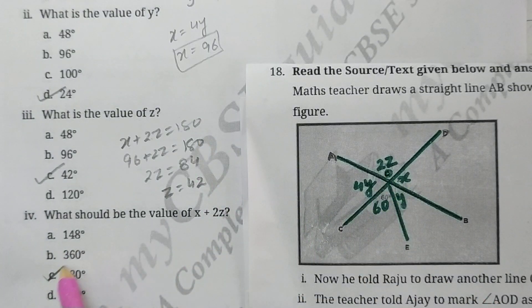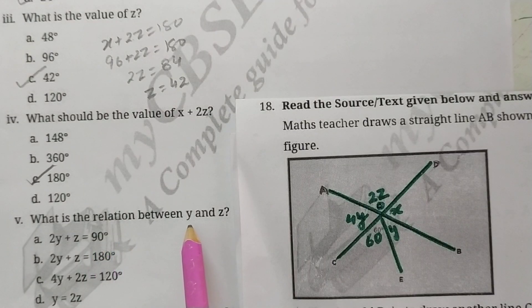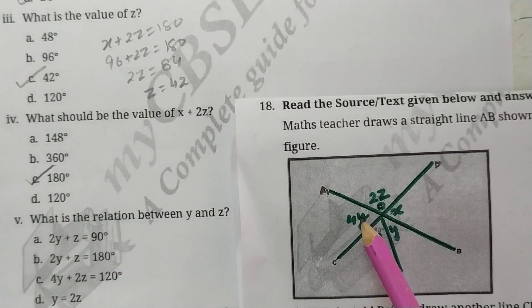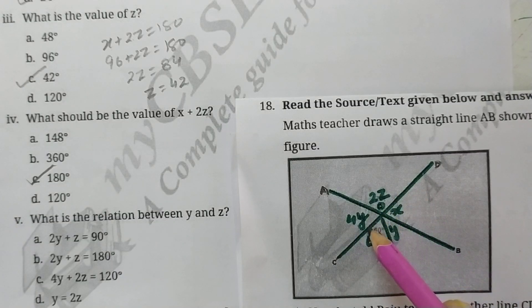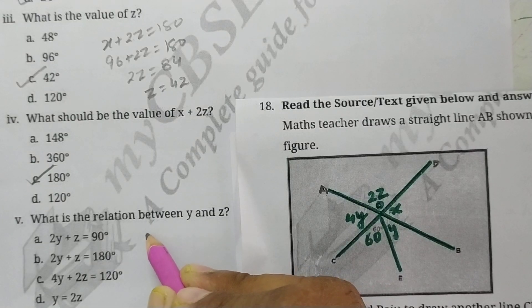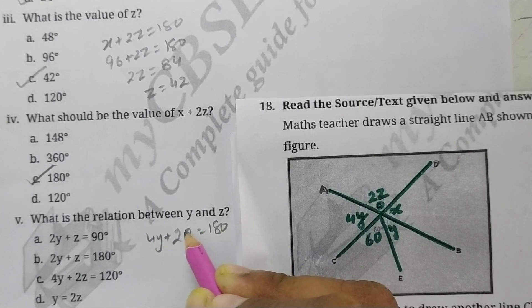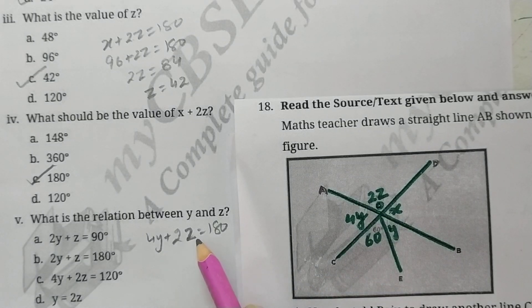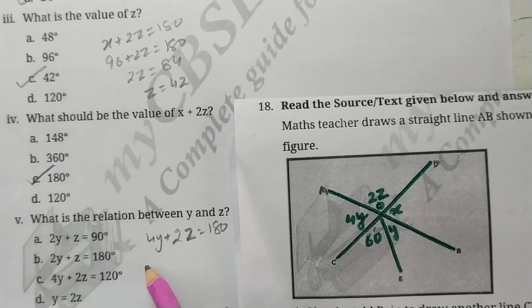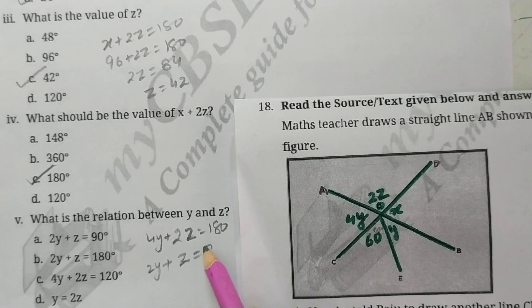Next is: What is the relation between y and z? So y and z, see here, 4y and 2z are also forming linear pair because they are on the straight line. So their sum will be 180 degrees, because these are forming linear pair. So if I divide this full equation by 2 on both sides, I'll get 2y plus z equals 90.